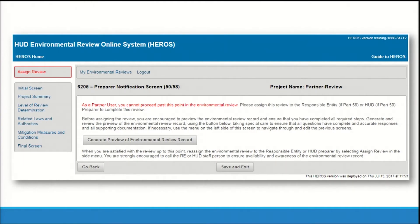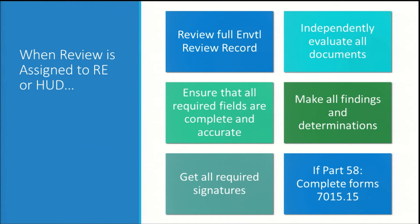When all of your partner's analysis is complete, they will be directed to screen 6205, the Prepare a Notification screen, where they will be prompted to generate a preview of the environmental review record and assign the review to the next user. As HUD or responsible entity user, you do not have access to this screen. Only after the review is assigned to you will you be able to begin editing. Once the review is assigned to you, you're responsible for independently evaluating all documents and information provided by the partner and finalizing the review. Remember that it's the responsible entity for Part 58 or HUD for Part 50 that is legally responsible for the contents and quality of the environmental review. Review the full environmental review record, including each screen in HEROES, confirm that all required fields are complete to your satisfaction, and make all findings and determinations. Finally, complete the review by obtaining all required certifications and, for Part 58 reviews, completing Form 7015-15, the request for release of funds and certification, and awaiting Form 7015-16, the authority to use grant funds from HUD.